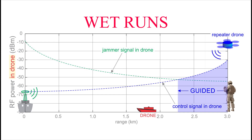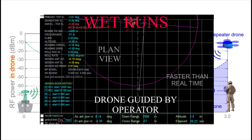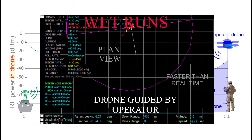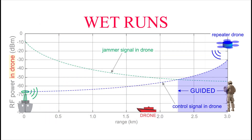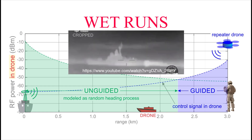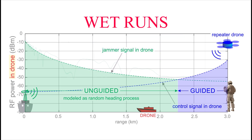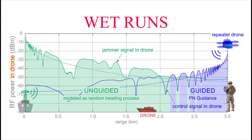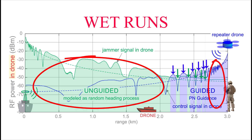In the present case, the operator is modeled as a proportional navigation guidance law. When connected, the operator acts like a guided missile. But as soon as the jammer power becomes higher than the control signal power, the operator becomes disconnected from the drone. For illustration purposes, this condition is modeled by the drone following a random heading process determined by surface waves, as seen in videos. If propagation is realistically modeled, it is reasonable to assume that the guidance signal may be disconnected and reconnected several times as the drone passes through a transition region between long range, where the control signal dominates, and near range, where the jammer signal dominates.